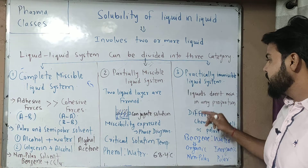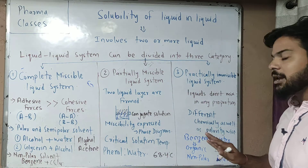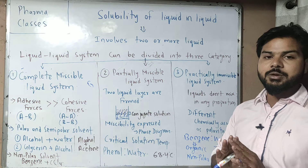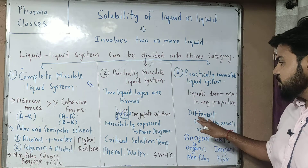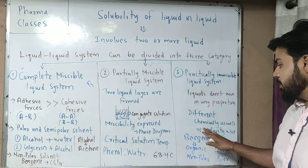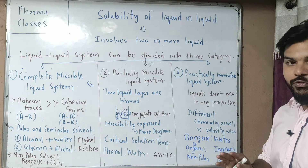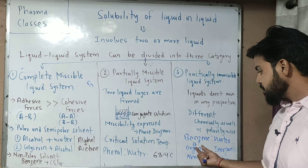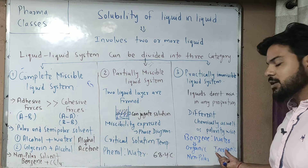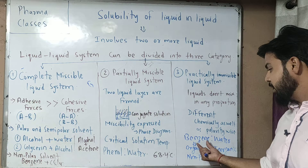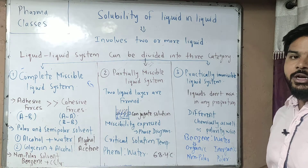Practically immiscible liquid systems do not mix in any proportion. The difference is due to their chemical nature and polarity. For example, benzene is organic and non-polar, while water is inorganic and polar. Because of this difference, benzene and water are practically immiscible.